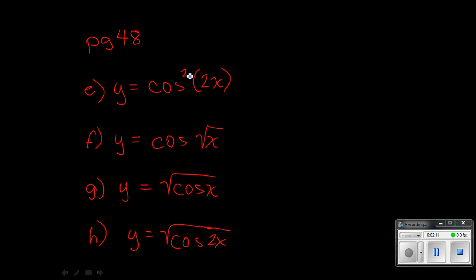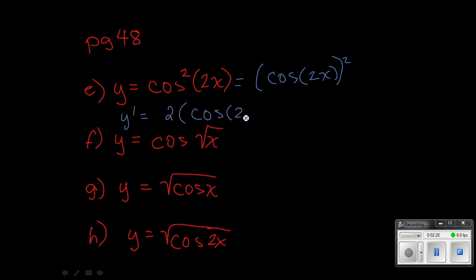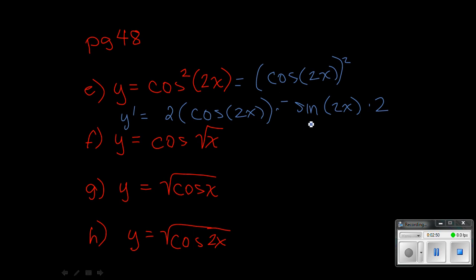On letter E, we've got three things going on. We could rewrite this: it's going to be cosine 2x, and then that whole thing is being squared. So if we take the derivative, the 2 comes out front, everything inside stays the same to the 1 power. Now I take the derivative of the cosine, which is negative sine, keep the 2x the same, and then take the derivative of the inside of that, which is 2x, so the derivative is 2. You could simplify this to negative 4 cosine 2x sine 2x.